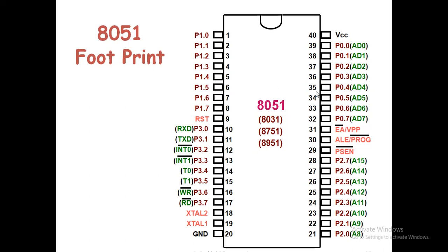The 8051 consists of four ports, each with 8 pins — so 4 × 8 = 32 pins total. Port 0 (P0.0 to P0.7) acts as simple input/output as well as an alternative function. P2.0 to P2.7 also acts as simple I/O and alternative functions. Port 3.0 to 3.7 acts as simple I/O and alternative functions. But Port 1.0 to 1.7 acts only as input/output pins with no alternate function.